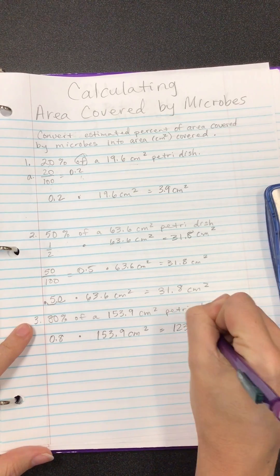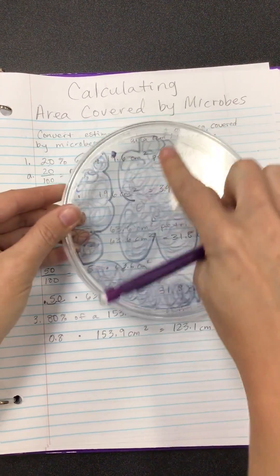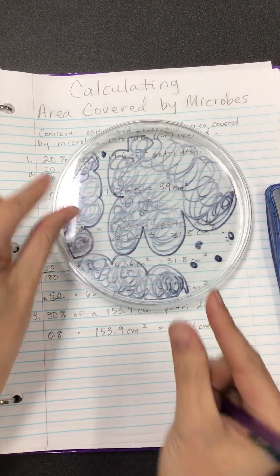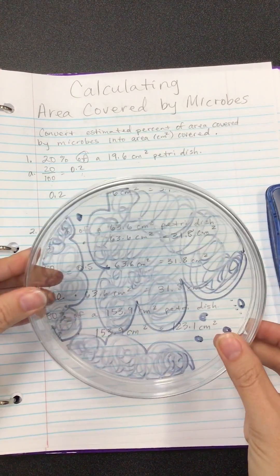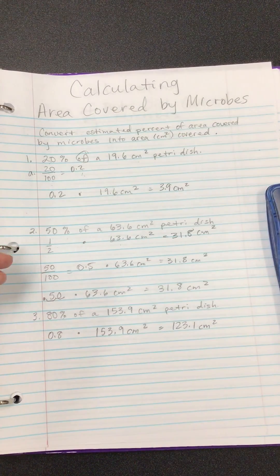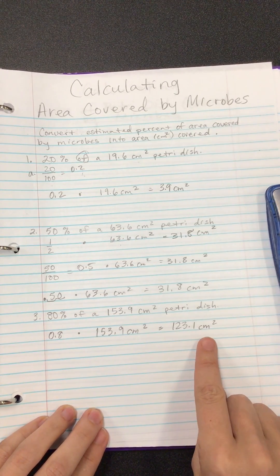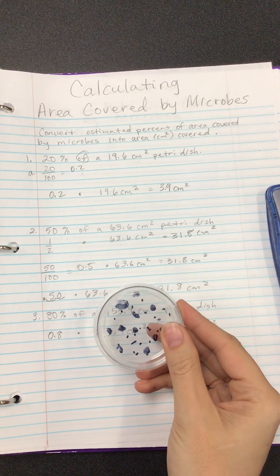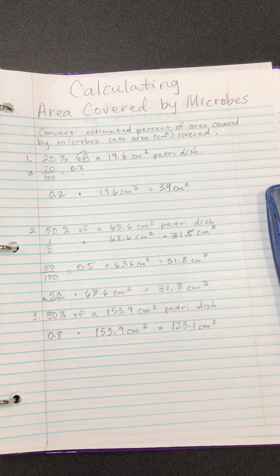One hundred and twenty three point one centimeters squared — which means that out of this whole petri dish, if I was just looking at the area covered by microbes, I could fit one hundred and twenty three centimeters squared in that area. That's how you do it — it's really simple. And what's great is now that we know the area covered by microbes, if we can figure out how big one microbe is, we can determine how many cells are covering these petri dishes, which is going to be in the billions — hundreds of millions. That's pretty cool. I hope this helped.